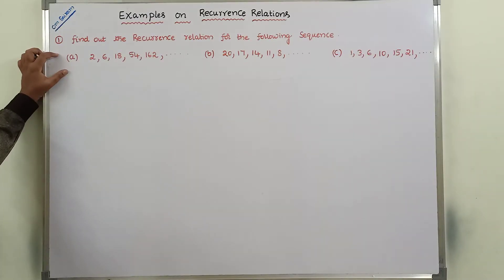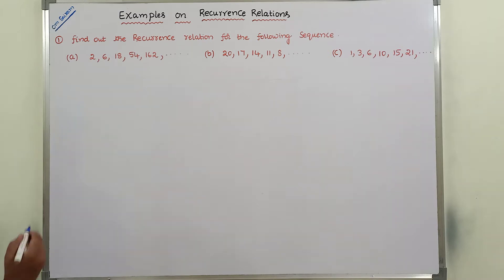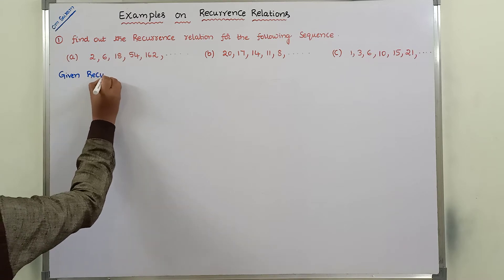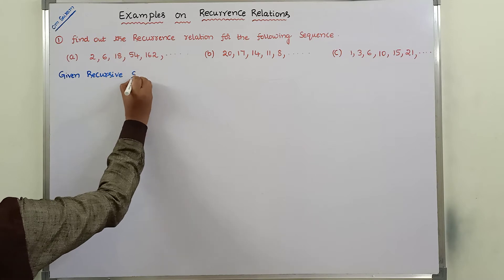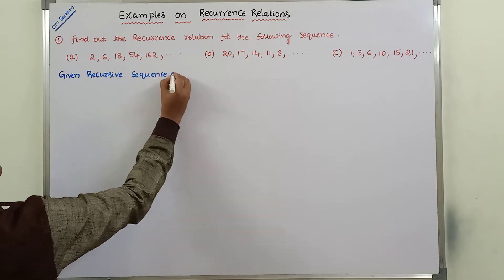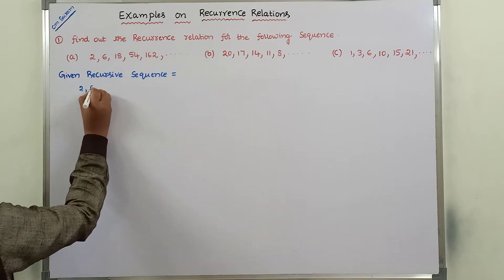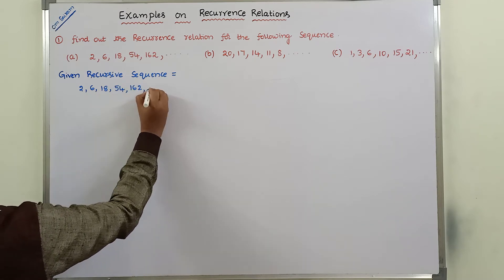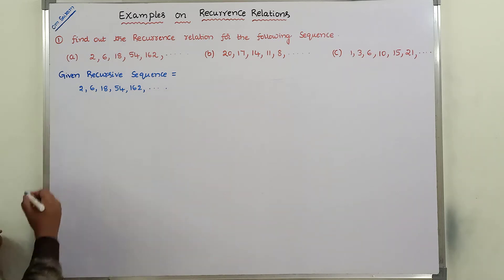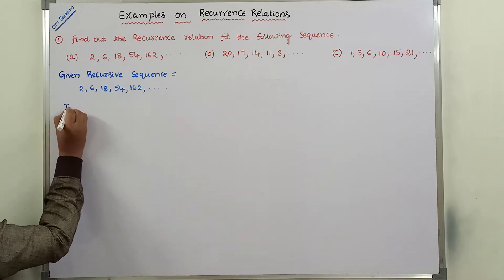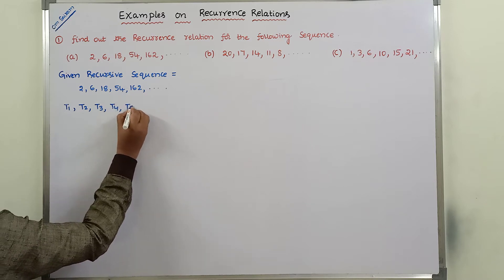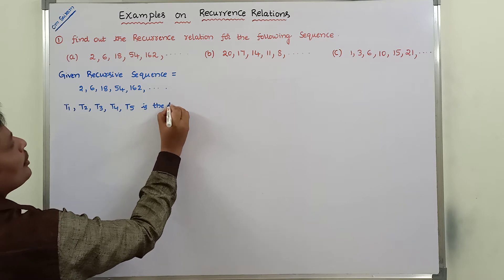Now consider the first problem. The given recursive sequence is 2, 6, 18, 54, and 162, and so on. Each term in the given recursive sequence is denoted by T1, T2, T3, T4, T5.